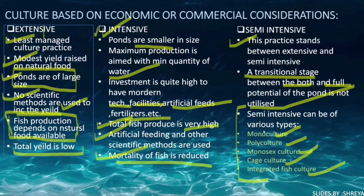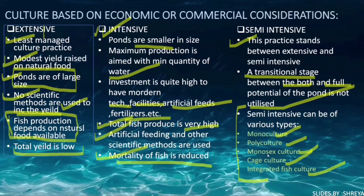If we get a question about what is monoculture, we first write about semi-intensive culture, then explain monoculture. Similarly, if we get a question about polyculture, we write that it is a semi-intensive culture technique and continue with the answer. The same approach applies to monosex culture, cage culture, and integrated fish culture.